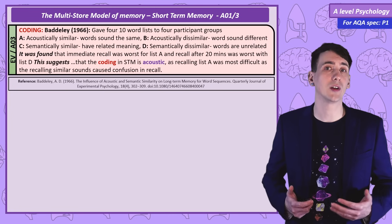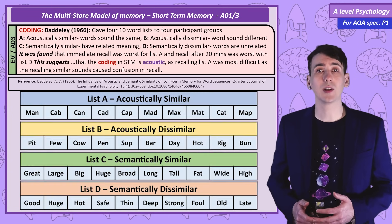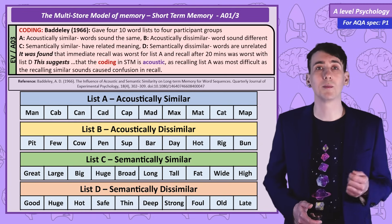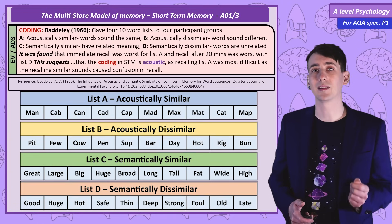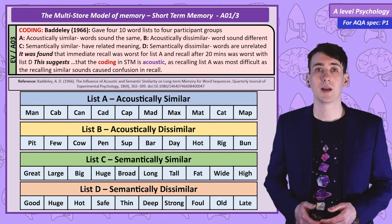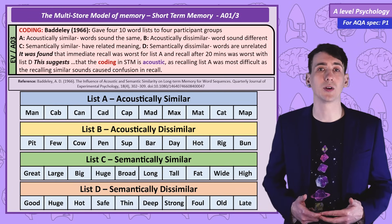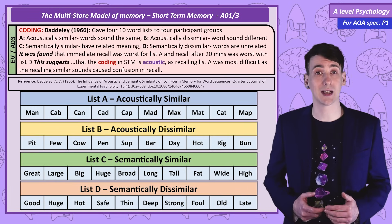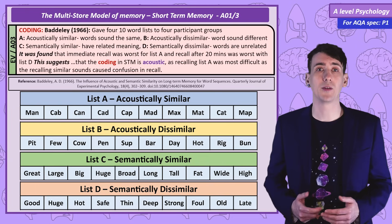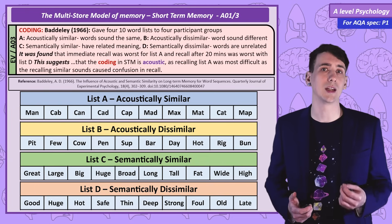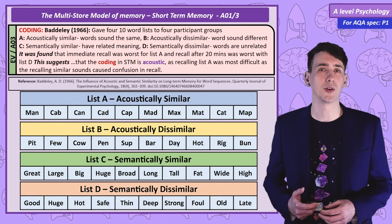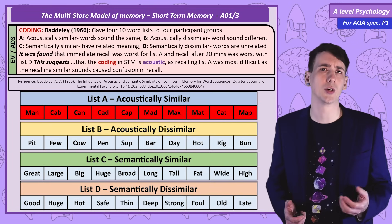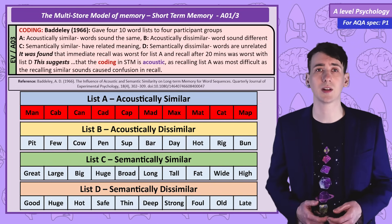Baddeley gave participants word lists to recall. These word lists were either acoustically similar, acoustically dissimilar, semantically similar, or semantically dissimilar. Baddeley had participants either recall immediately — testing short-term memory — or after 20 minutes, testing long-term memory. The results showed the worst recall in the immediate recall condition was for the acoustically similar words. Baddeley argued this showed short-term memory is coded acoustically, with acoustic similarity causing confusion.